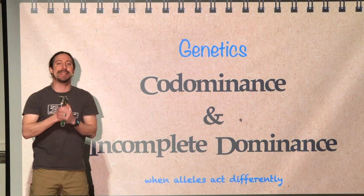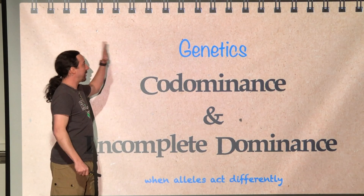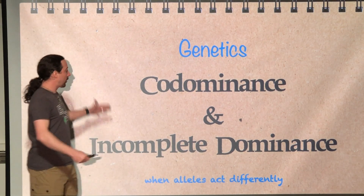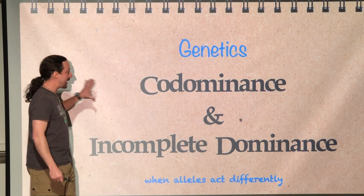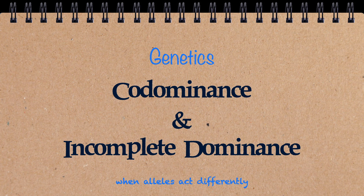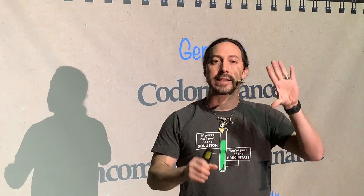Hello and welcome to this next episode of Tutor Tutors where we are continuing in genetics and we are going to be looking at co-dominance and incomplete dominance. In the past episodes we were looking at complete dominance where you could have one allele either completely dominant or completely recessive to the other allele — one allele could mask the other. That's not always the way that alleles interact, so we're going to look at two different ways that alleles can interact with each other.